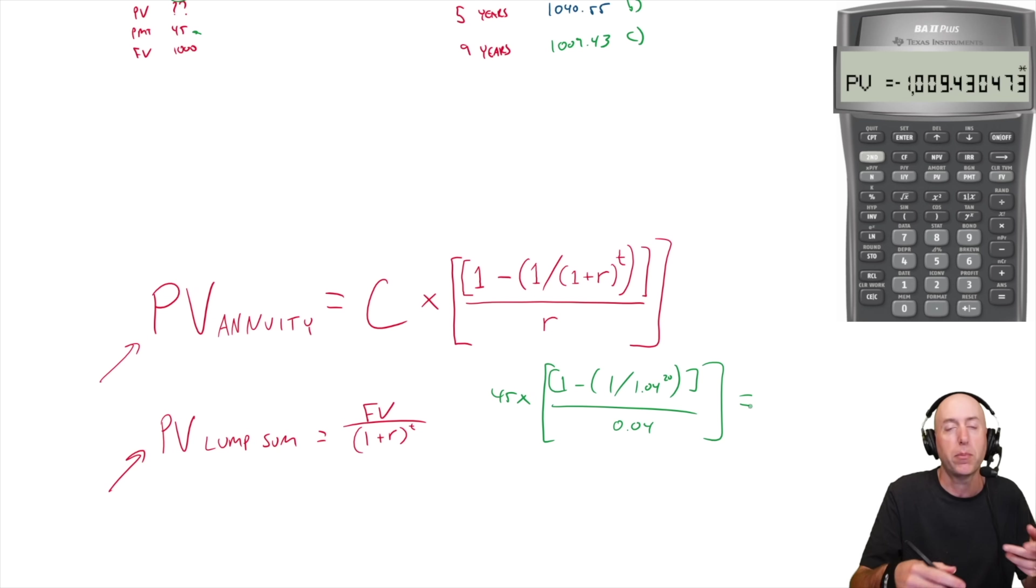And so there we have it. We have our payment 45 times what's in brackets. That's going to give the present value of those regular interest periods. What about the present value of the lump sum? Well, again, we're getting paid a thousand dollars back at the end of the bond, divide by 1.04, 1 plus R to the T, 1.04 to the power of 20.